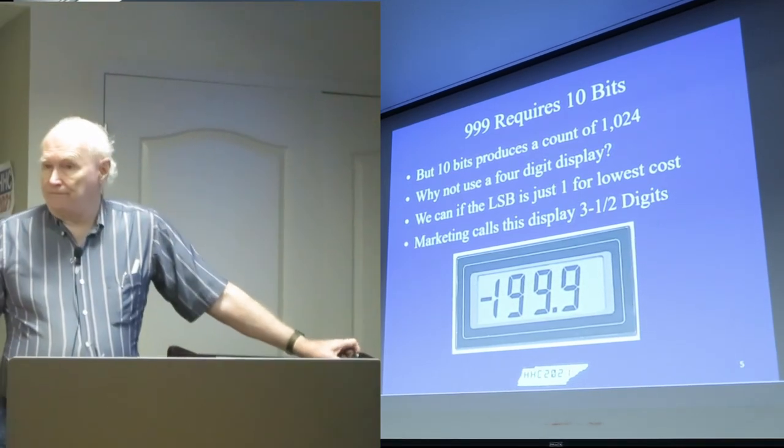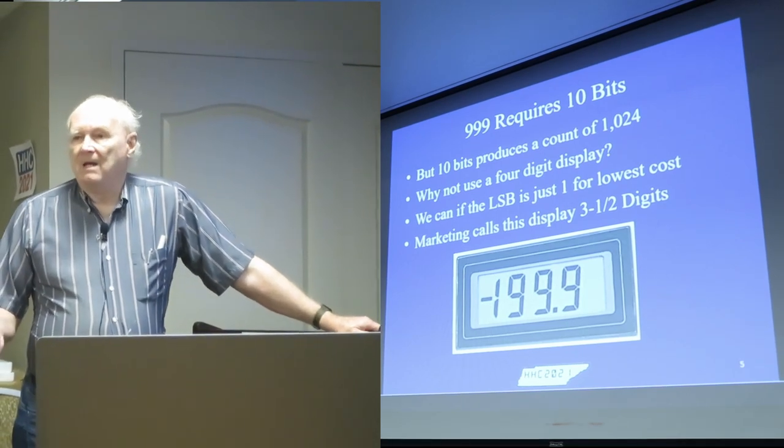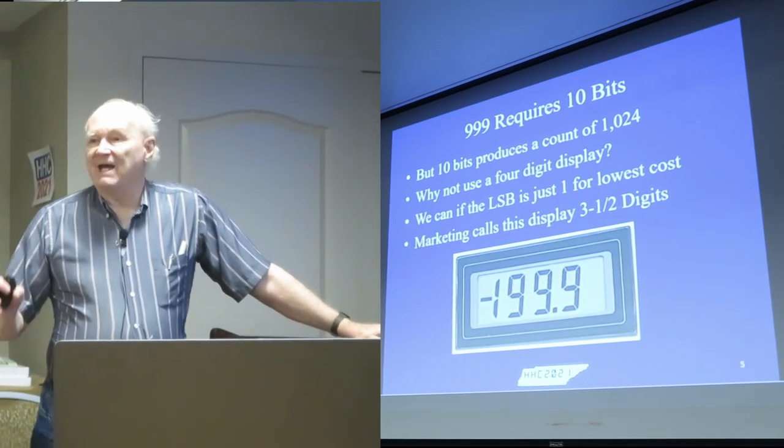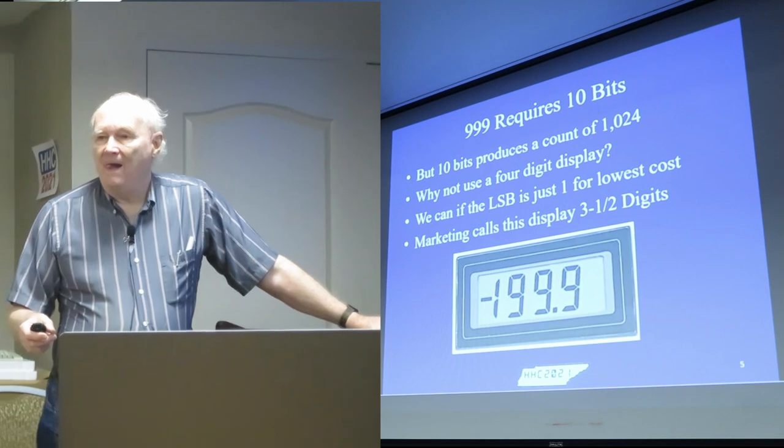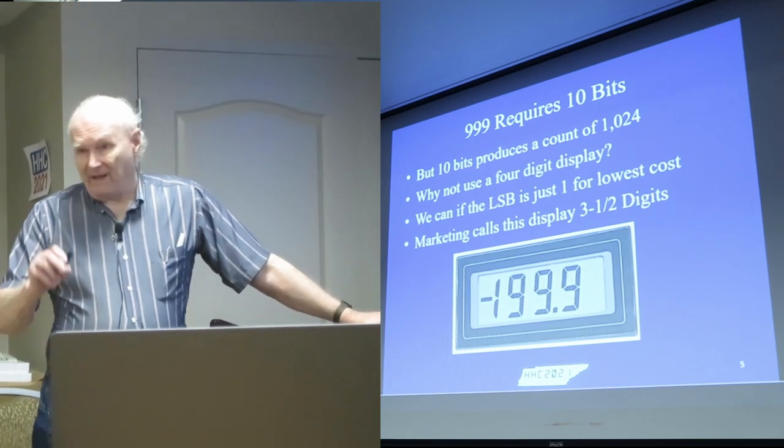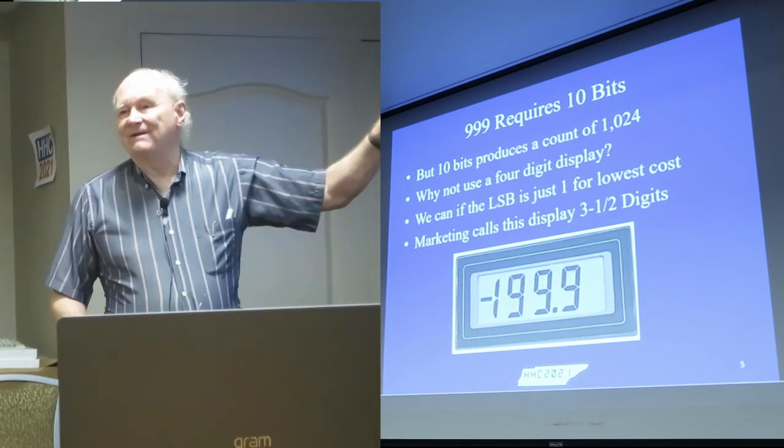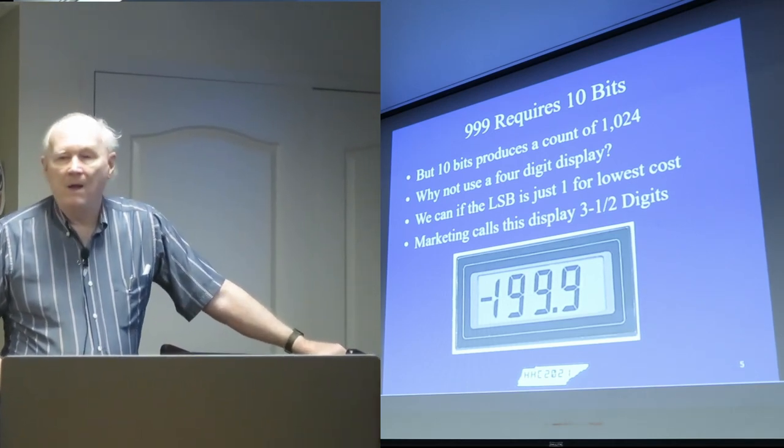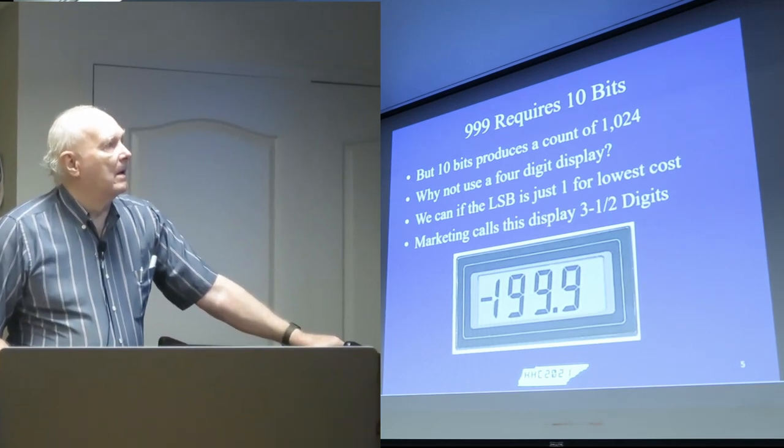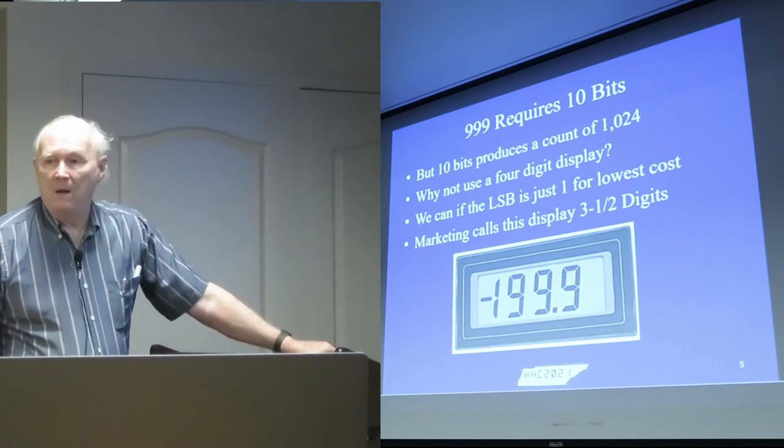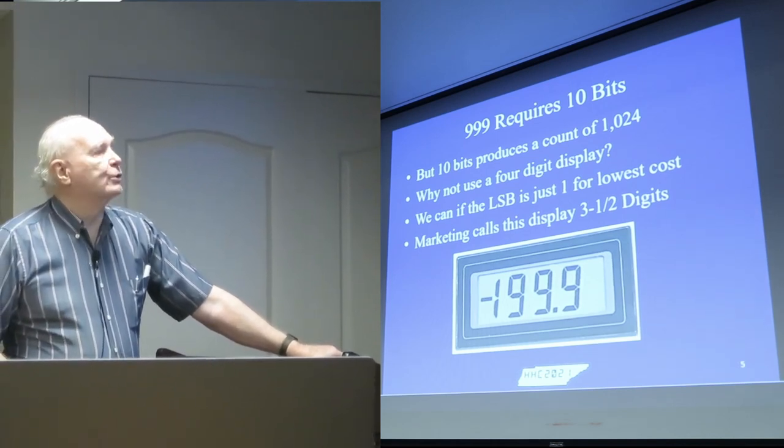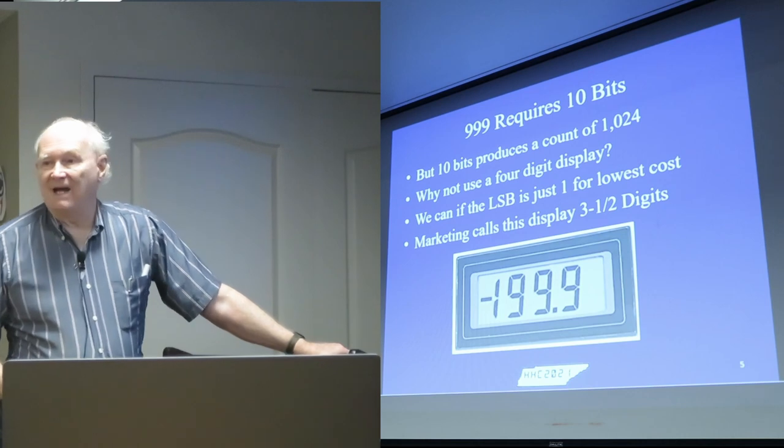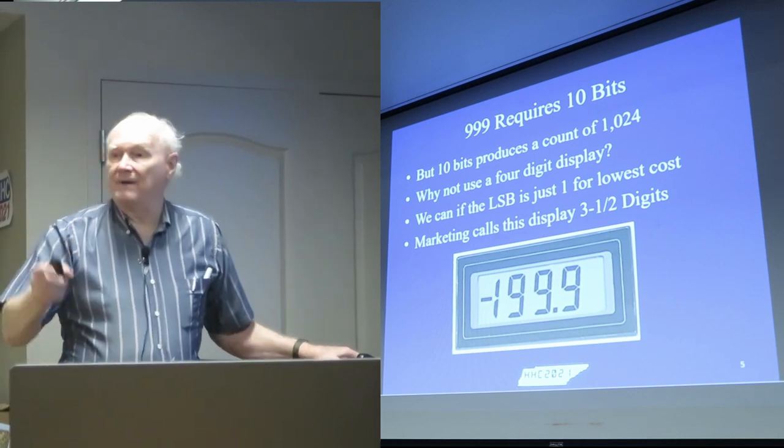From a real-world perspective, three and a half digit multimeters always use at least 11 bits. I'm not disputing that, but theoretically all you need is this. No, because 10 bits can only get you to 1024. It has to be 11 bits. Oh, you're saying for 1999. Yes, that's correct.